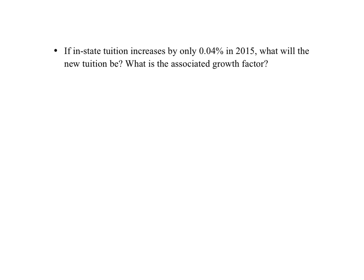Continuing in the same vein, we can ask: if in-state tuition increases by only 0.04% in 2015, what will the new tuition be, and what is the associated growth factor? Again, we start by converting the percentage increase to decimal form. 0.04% is equivalent to 0.0004 as a decimal.